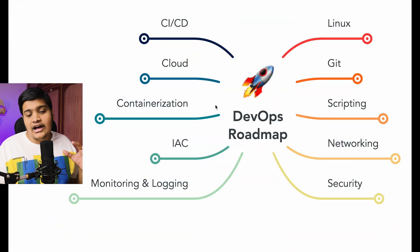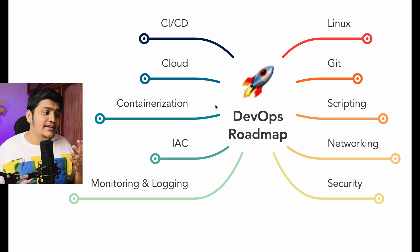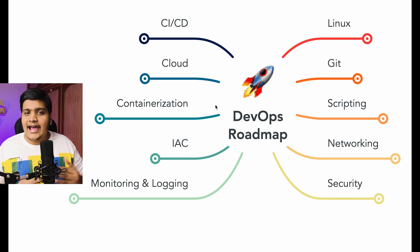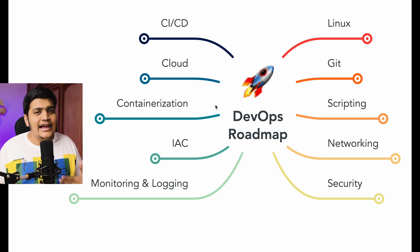Hey, what's up everyone, and welcome to Daily Code Buffer. In this video we're going to see a complete DevOps roadmap so you'll know all the things you need to learn to be a DevOps engineer. If you look at the screen, these are all the overall concepts — Linux, Git, scripting languages, networking, security, CI/CD pipeline, cloud, infrastructure as code, monitoring and logging tools, and a lot more. You don't have to be overwhelmed or master all of these; basic understanding and working knowledge is just fine to get started.